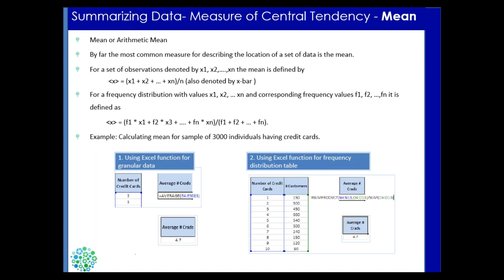The first measure of central tendency is mean, also called arithmetic mean. For data x1 to xn, you do a summation of all values and divide by the number of observations: (x1 + x2 + ... + xn) / n, denoted as x-bar. When frequency values are populated against each value, you calculate: summation of (xi × fi) divided by summation of all frequencies. In Excel, you use the SUMPRODUCT function — multiply the number of credit cards column by the number of customers column, then divide by the SUM of customers.